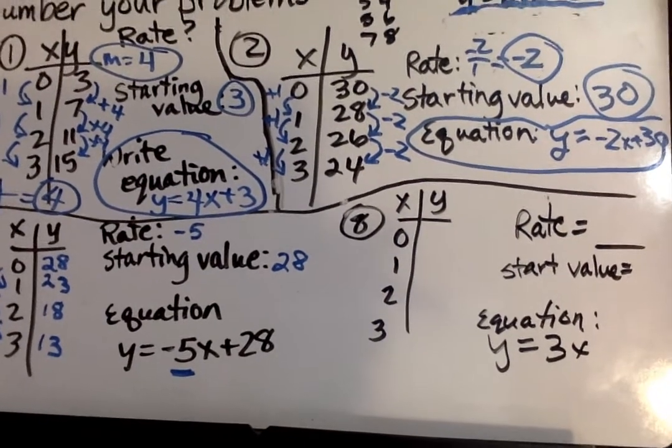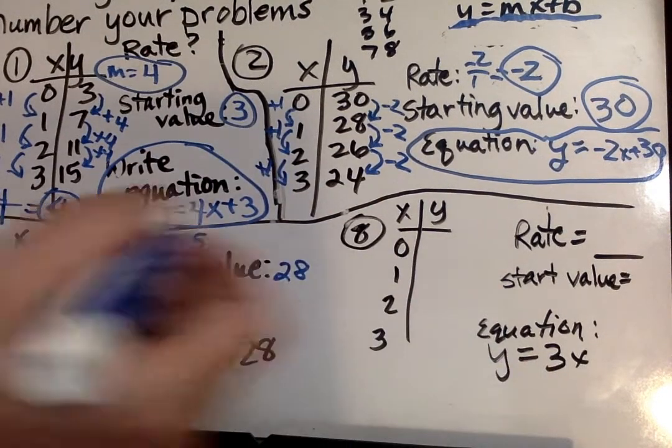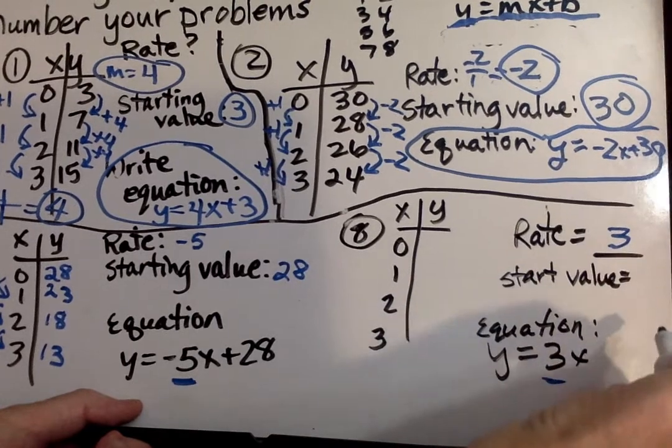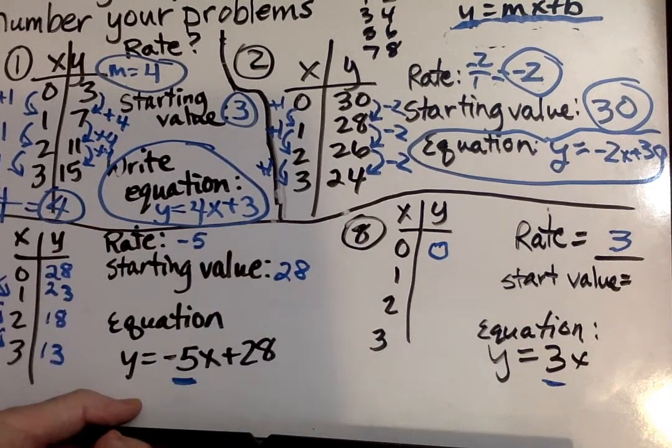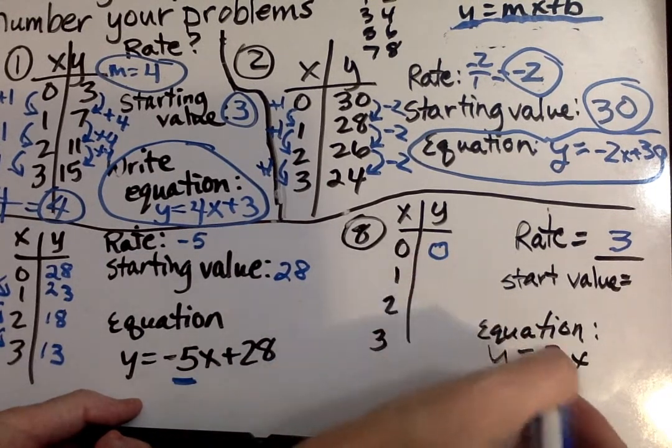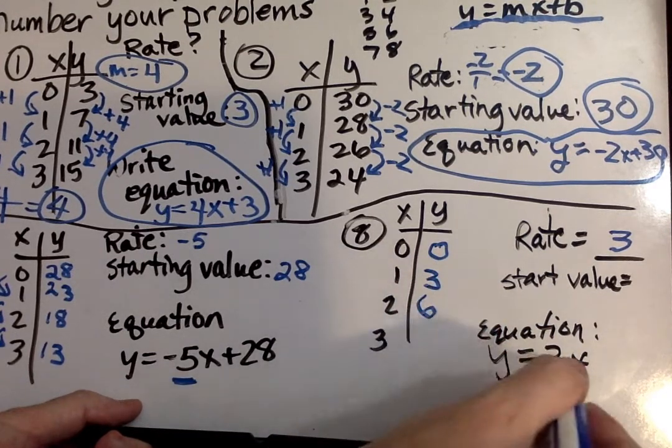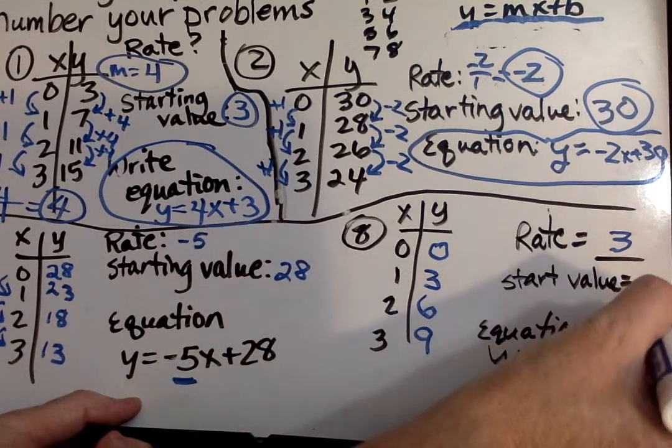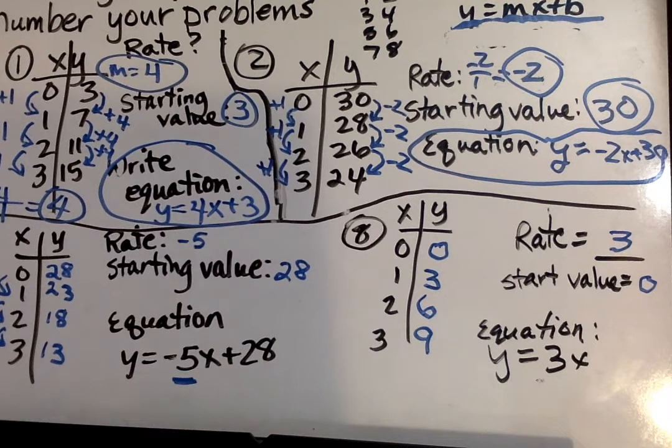Now, we're going on to number 8. Over here, we're also given the equation. What's our rate? It's whatever's in front of X when it's solved for Y, so that's 3. What's our starting value? When X is 0, what's Y? 0 times 3, 0. When X is 1, what's Y, what's 1 times 3, and 2 times 3, and 3 times 3. The starting value, when X is 0, what's Y? 0. So if you had 3X plus 0, that would give you your starting value. All right. You can do the rest of the first page.